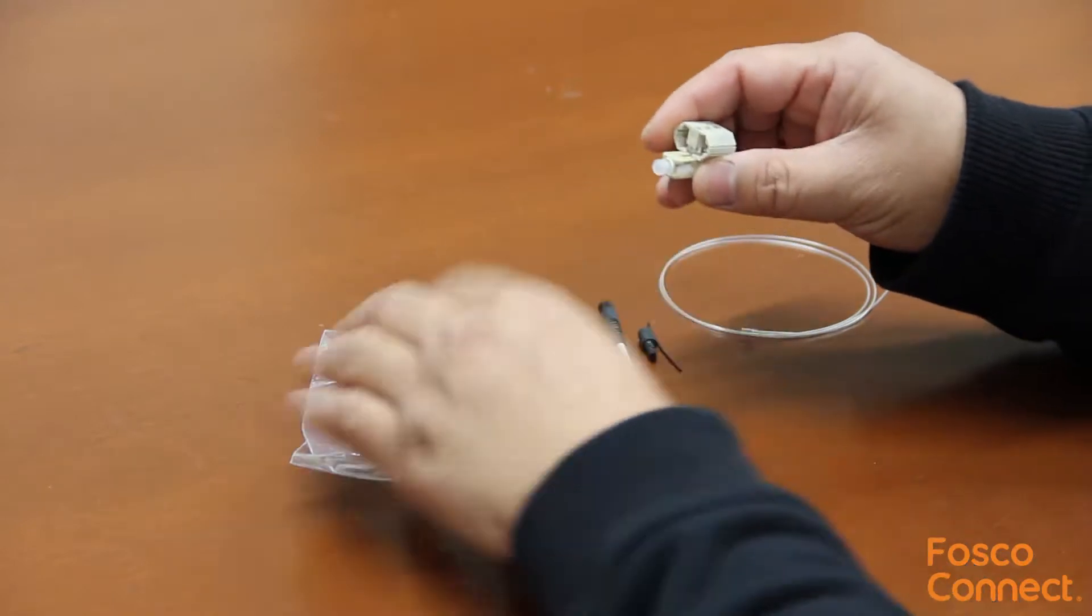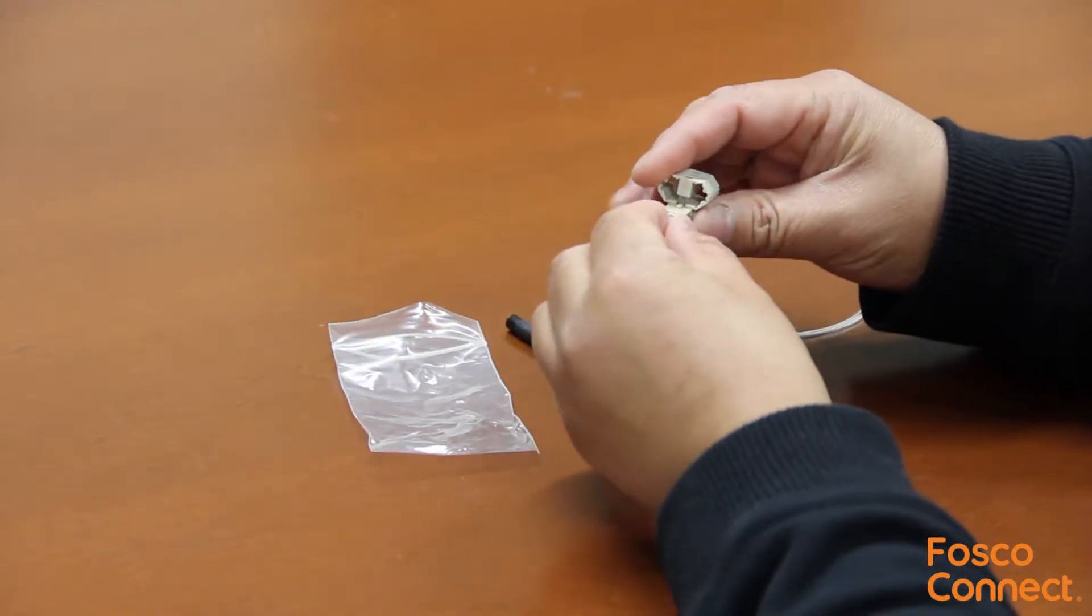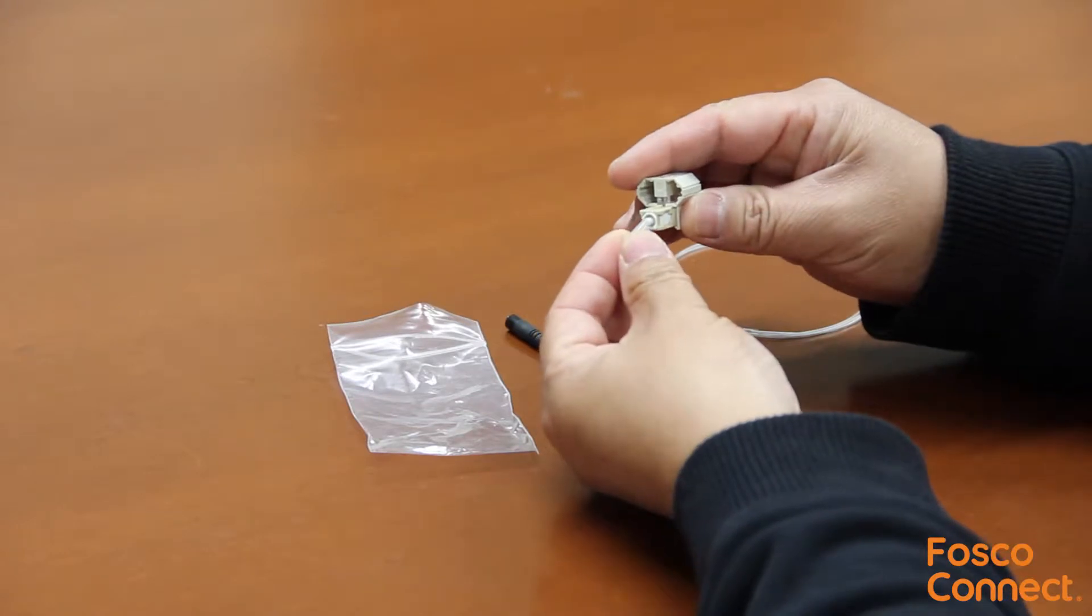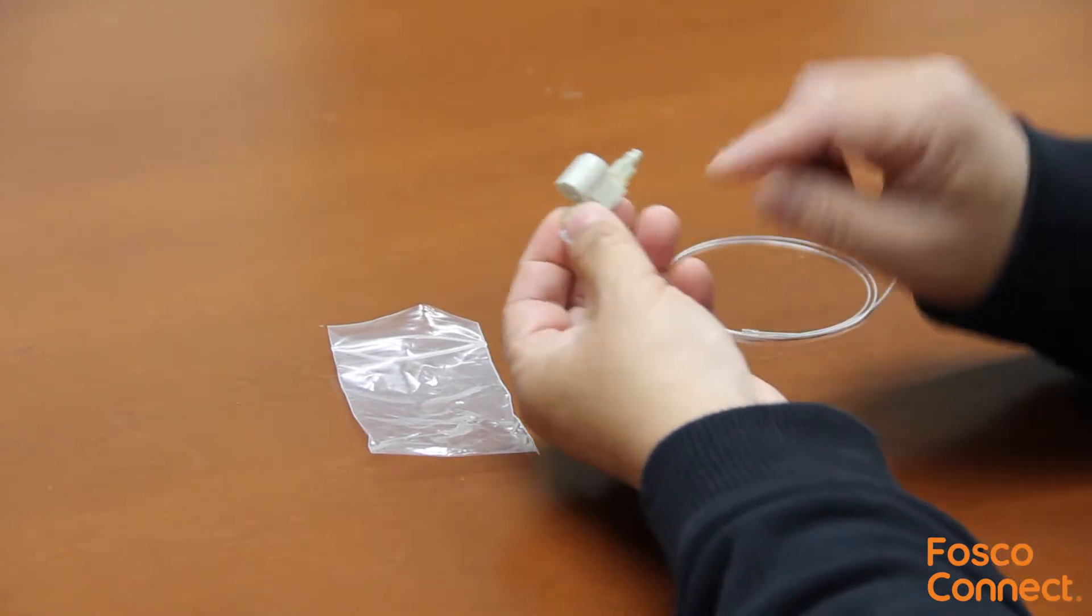The ferrule is protected by a dust cap. There is a fiber stub inside the ferrule which is pre-polished in the factory. There is no epoxy or polish needed.